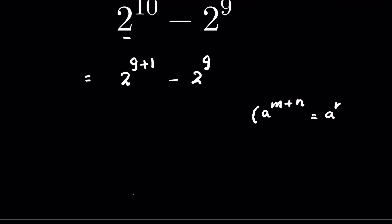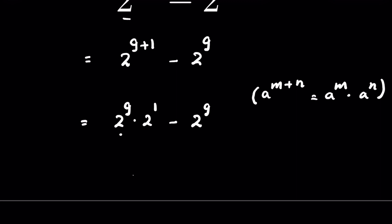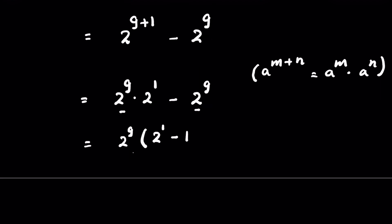So we can write it as 2 to the power 9 times 2 to the power 1, minus 2 to the power 9. Now we can take 2 to the power 9 as common, giving us 2 to the power 9 multiplied by 2 to the power 1 minus 1, which equals 2 to the power 9 times 2 minus 1.